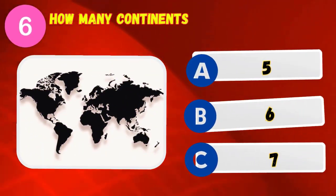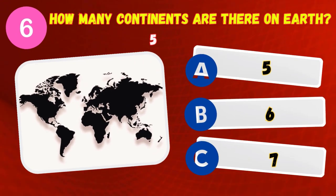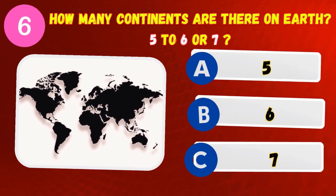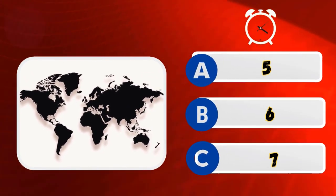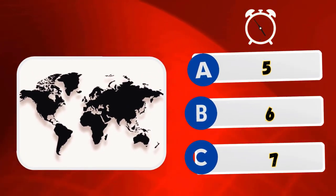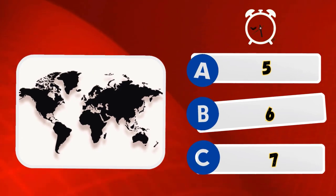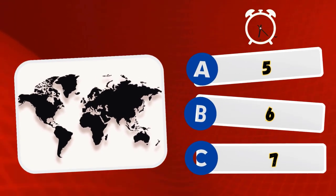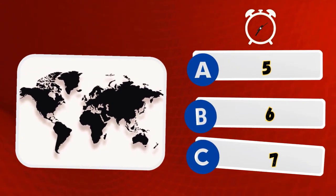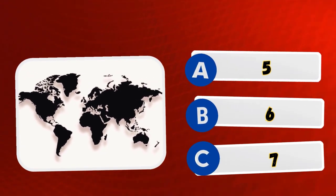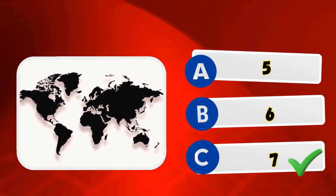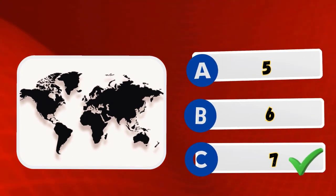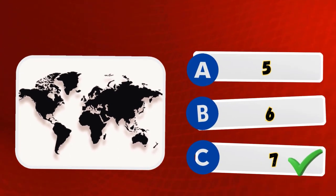How many continents are there on Earth? 5, 6, or 7? You guessed right! 7 is correct!